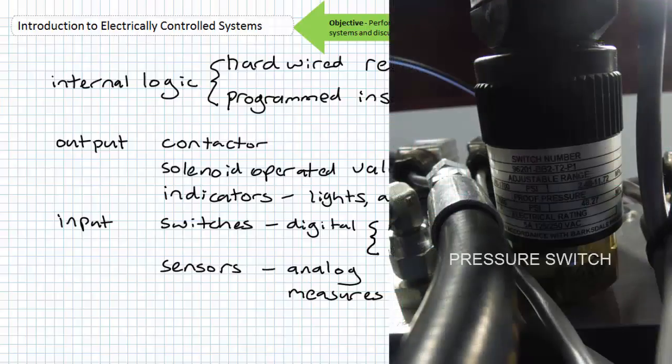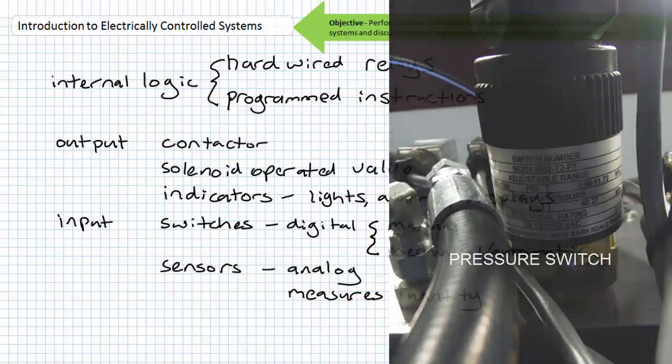An example might be a pressure switch that starts a pump when pressure falls below some desired value and stops it when pressure rises above a certain value. The differential between the cut-in and dropout pressure is known as span, hysteresis, or override, and is necessary for the proper operation of such a system. The differential prevents the pump from bouncing back and forth between on and off when operating near the set point.